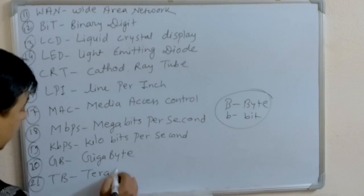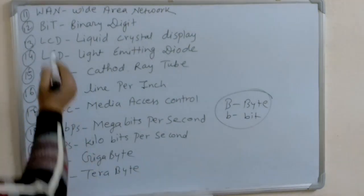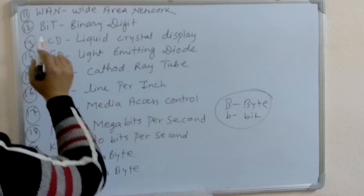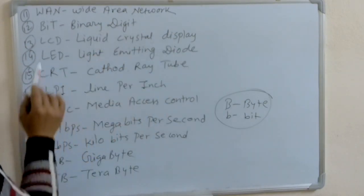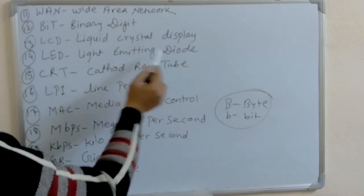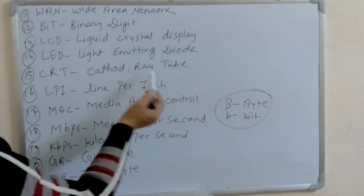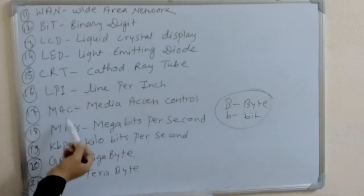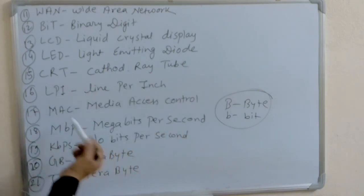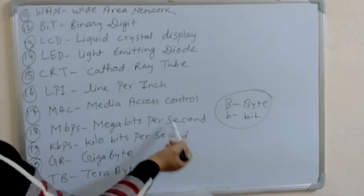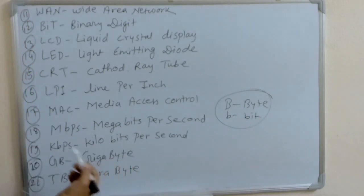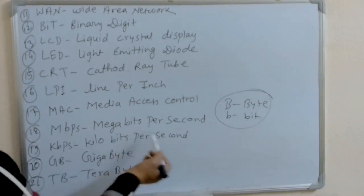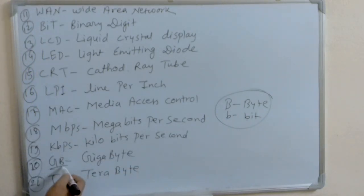TB: Terabyte. Quick recap: WAN — Wide Area Network. BIT — Binary Digit. LCD — Liquid Crystal Display. LED — Light Emitting Diode. CRT — Cathode Ray Tube. LPI — Line Per Inch. MAC — Media Access Control. MBPS — Megabits Per Second. If there is small 'b' then bit, capital 'B' then Byte. KBPS — Kilobits Per Second. GB — Gigabyte. TB — Terabyte.